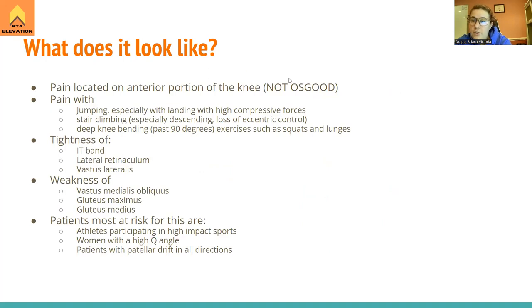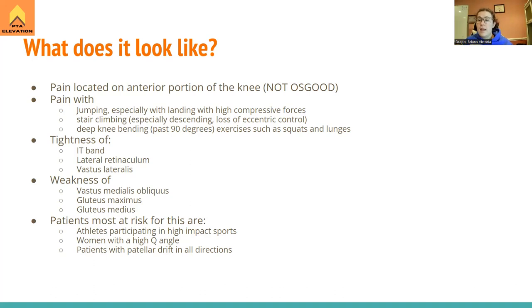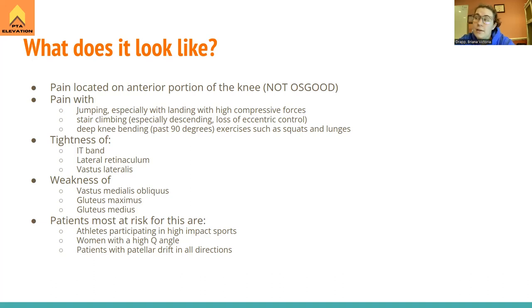Presentation is pain on the anterior side of the knee. We must differentiate this from Osgood-Schlatter's disease, which presents with anterior knee pain AND a prominent tibial tuberosity. Osgood-Schlatter's results from constant quad pulling on the tibial tuberosity via the patellar ligament, causing increased bone formation at that insertion. Both conditions share pain with jumping, running, and sports. Osgood-Schlatter's is more common in males; patellofemoral pain syndrome is more common in females.